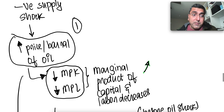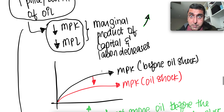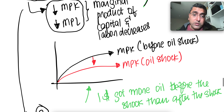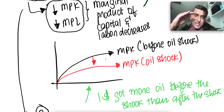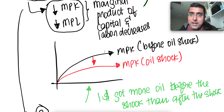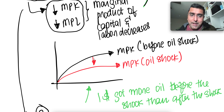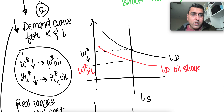When the price of oil goes up, the marginal product of capital and marginal product of labor go down. The intuition is that the MPK curve shifts down, because the same dollar that could get one barrel of oil now only gets 0.5 barrels. So the marginal product of capital curve shifts down. Similarly, marginal product of labor goes down, and the demand curve also shifts leftward.